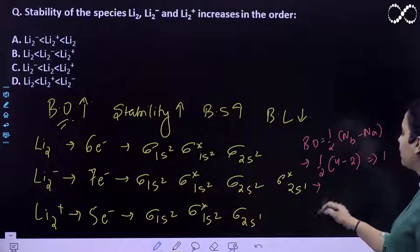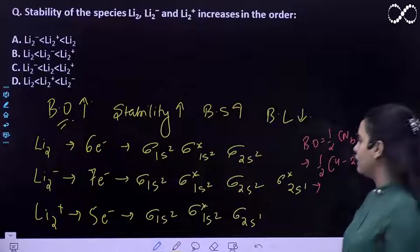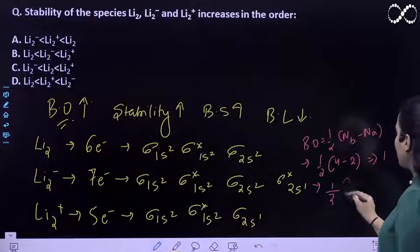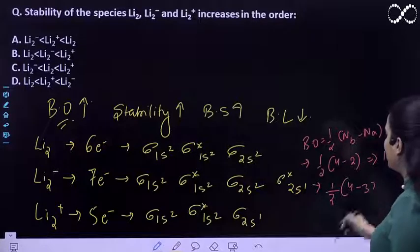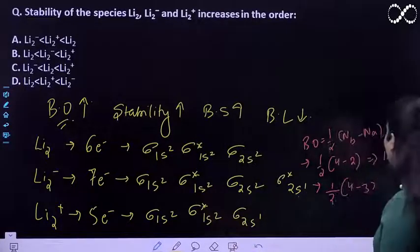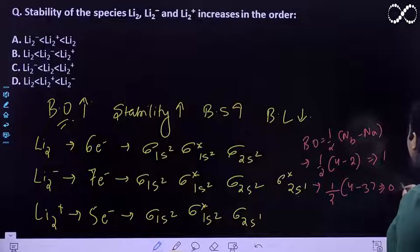If we talk about this second case, here in bonding you have 4 electrons. It is half of 4 minus 3, because 1 electron is here in anti-bonding and 2 electrons are here in anti-bonding. So the bond order is 0.5.